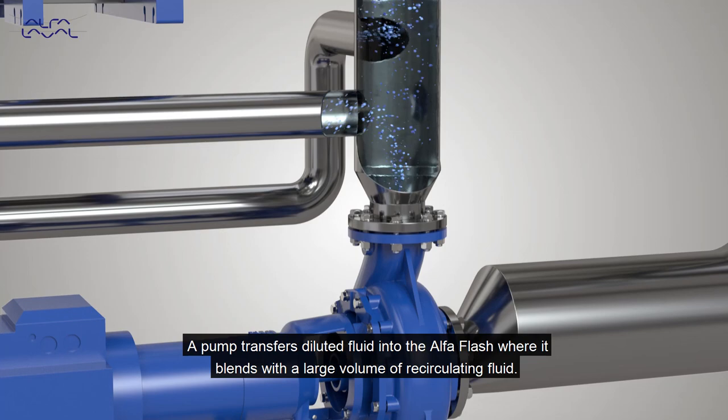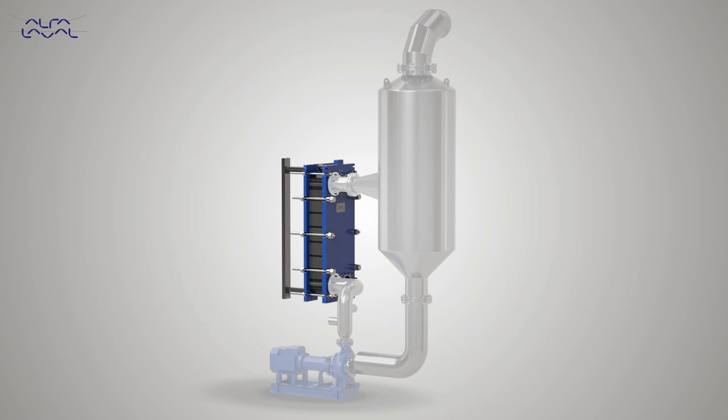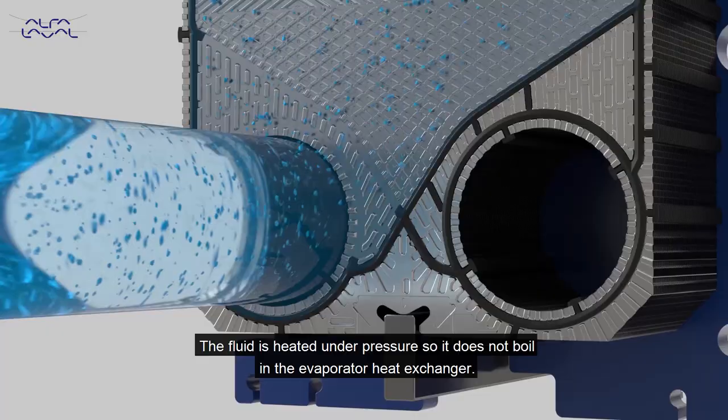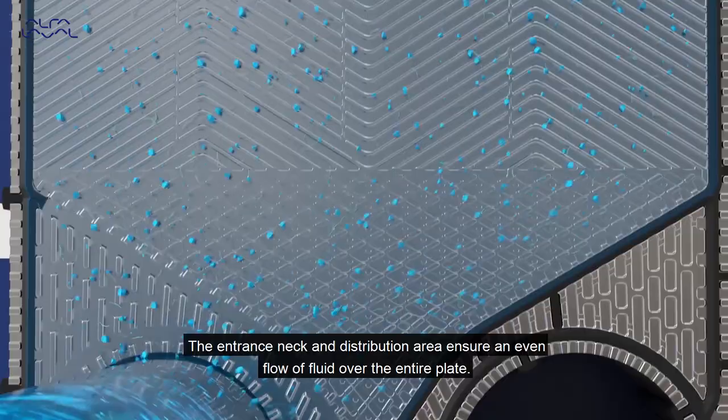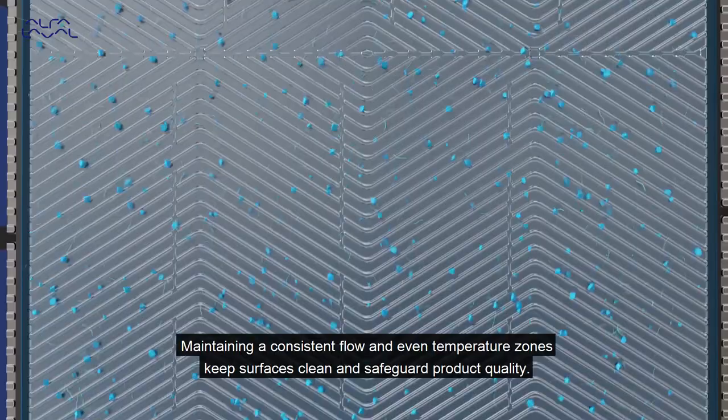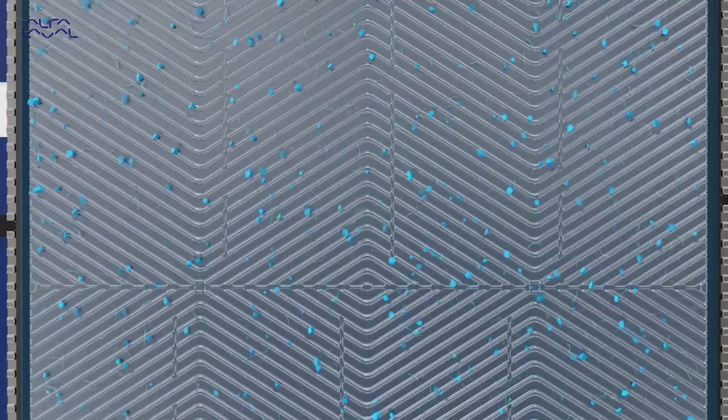A pump transfers diluted fluid into the Alpha Flash where it blends with a large volume of recirculating fluid. The fluid is heated under pressure so it does not boil in the evaporator heat exchanger. The entrance neck and distribution area ensure an even flow of fluid over the entire plate. Maintaining a consistent flow and even temperature zones keeps surfaces clean and safeguards product quality.